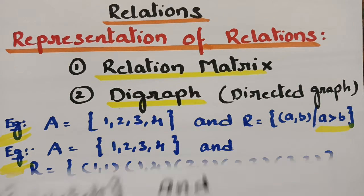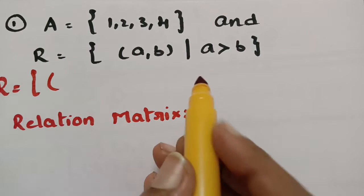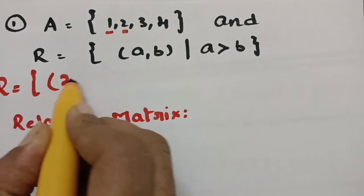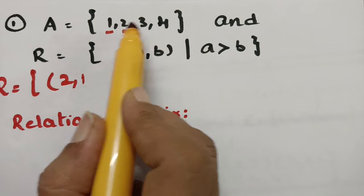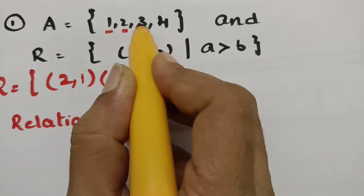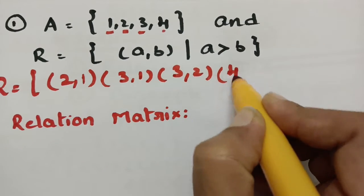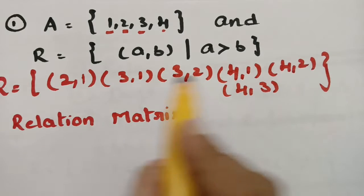I'll explain how to make a relation here. A is given as {1, 2, 3, 4} and the relation is the set of ordered pairs where a should be greater than b. If you take 1, so 1 is not greater than 2, 3, or 4 — leave it. If you take 2, so 2 is strictly greater than 1; 2 is less than 3 and 4 — leave those. Starting with 3: 3 is greater than 1, 3 is greater than 2, and 3 is not greater than 4 — leave it. Coming to 4: 4 is greater than 1, 4 is greater than 2, and 4 is greater than 3. So these are all the possible ordered pairs.